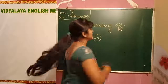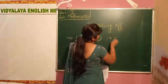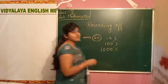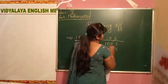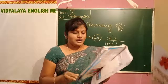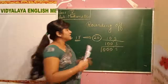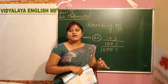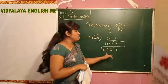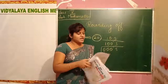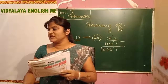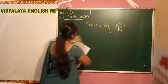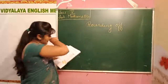In rounding of numbers, we have tens, we have hundreds, we have thousands. In the previous class, I told you how to round off to tens and how to round off to hundreds. In the tens place, we have to see the tens place. In the hundreds place, we have to see the hundreds place. In the thousands place, we have to see the thousands place. Now we will see the thousands place.